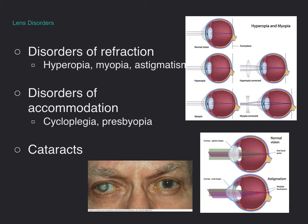With myopia, we have nearsightedness. It's the opposite problem where, in theory, the image should be focused in front of the retina, which obviously can't happen. So what ends up happening is we get blurred vision, and with correction, we can allow the eye to see better.